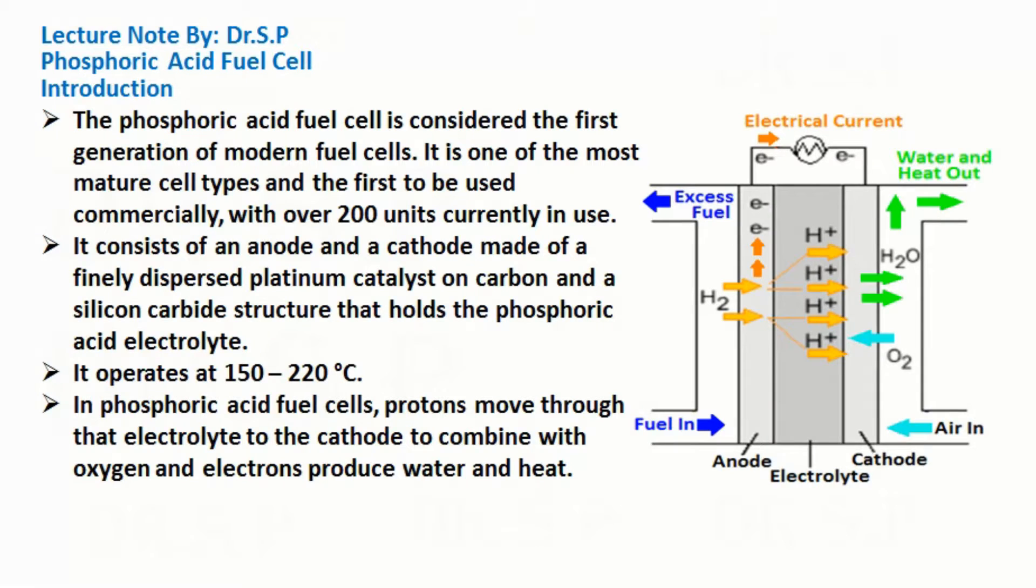It consists of an anode and cathode made of a finely dispersed platinum catalyst on carbon and a silicon carbide structure that holds the phosphoric acid electrolyte. It operates at 150 to 220 degrees Celsius.